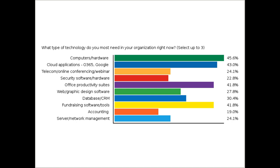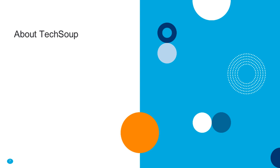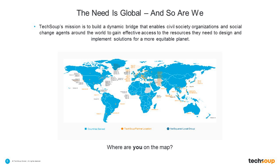Some of you may be new to TechSoup, or may have received donations before without being the person who administered them. TechSoup is also a 501(c)(3) nonprofit, operating in almost every country shown in blue on the world map — we have been around since 1987 and are headquartered in San Francisco. We work to be a dynamic bridge between civil society organizations and social change agents, serving nonprofits, public libraries, foundations, community foundations, family foundations, and religious organizations.